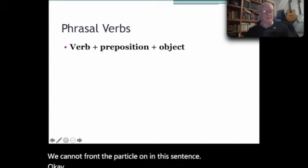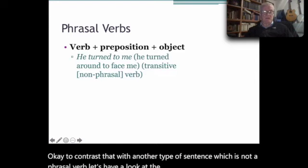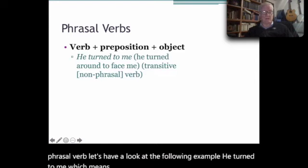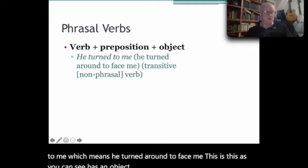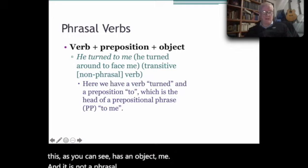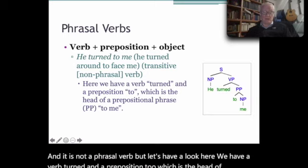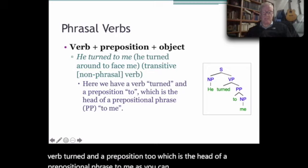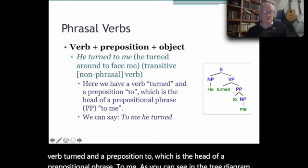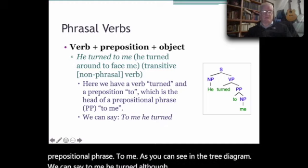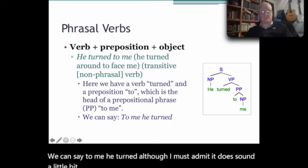To contrast that with another type of sentence which is not a phrasal verb, let's look at the following example. 'He turned to me,' which means he turned around to face me. This, as you can see, has an object 'me,' and it is not a phrasal verb. Here we have a verb 'turned' and a preposition 'to,' which is the head of a prepositional phrase 'to me,' as you can see in the tree diagram. We can say 'to me, he turned,' although I must admit it does sound a little bit strange. But in other verb phrases of this kind, they sound a lot more natural.